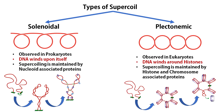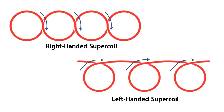There are two principal conformations of supercoiled DNA: solenoidal and plectonemic. Solenoidal supercoiling is mainly observed in prokaryotes, where the DNA chain supercoils onto itself, and this conformation is maintained by nucleoid-associated proteins. Plectonemic supercoiling is mainly observed in eukaryotes, and this conformation arises as DNA is wrapped around the nucleosomal particles. Supercoiling can be of two types — right-handed and left-handed. You can see the trajectories of the DNA helix axis in each case. Both types of supercoiling can be observed in real DNA, whether it is solenoidal or plectonemic.